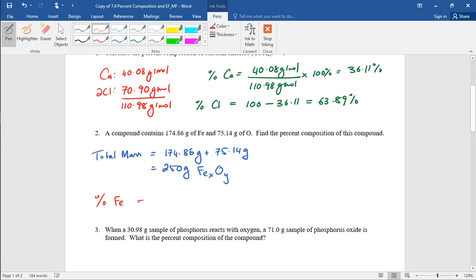This doesn't change anything about the actual work here. So we just put the mass of iron, 174.86 grams over 250 grams, times 100. That gives you 174.86 over 250 times 100, which gives you 69.94% iron.